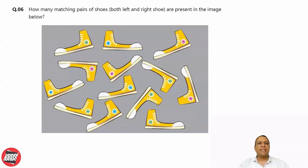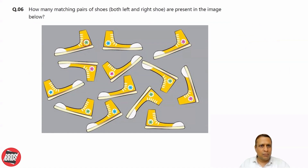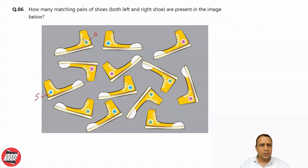Next question: how many matching pairs of shoes are present in the image given below? So for a matching pair, the difference could be the number of petals - here you can see there are five such things, here there are six. The difference could also be the number of lines; for example here you can see one, two, three, four, five, six, seven such lines. This portion looks almost the same so there won't be any difference because of this.